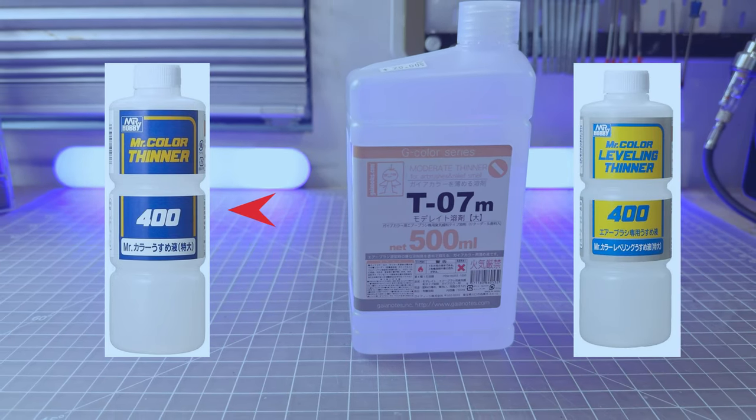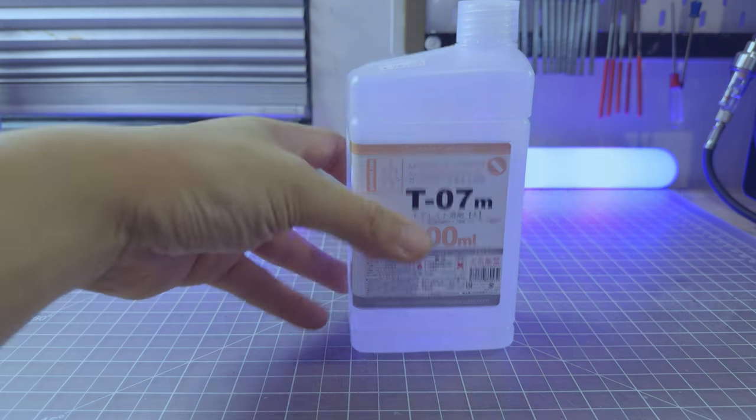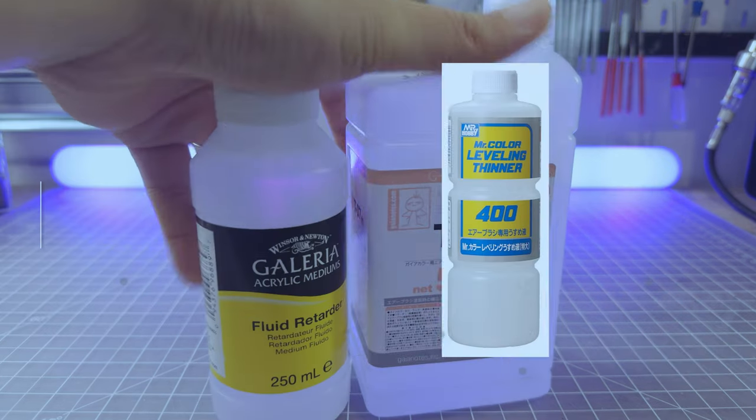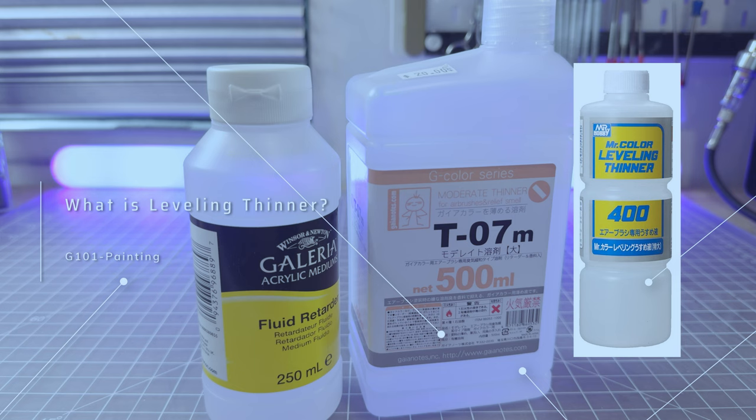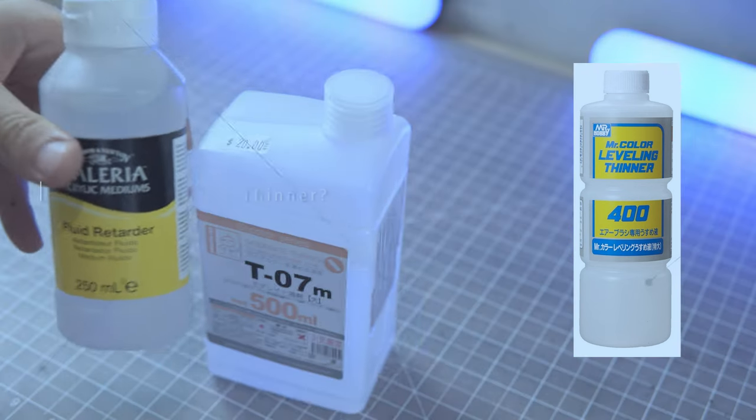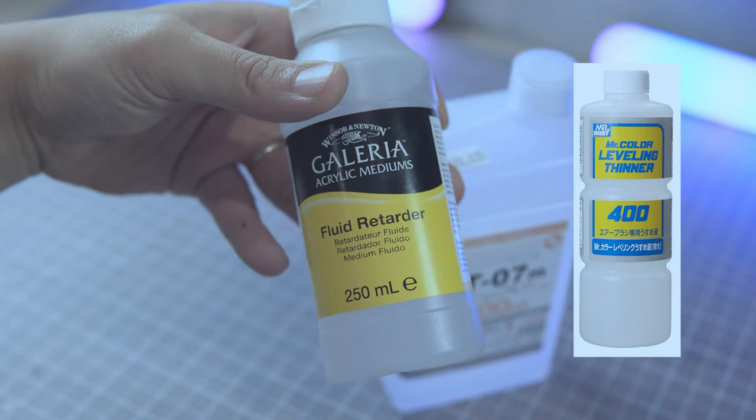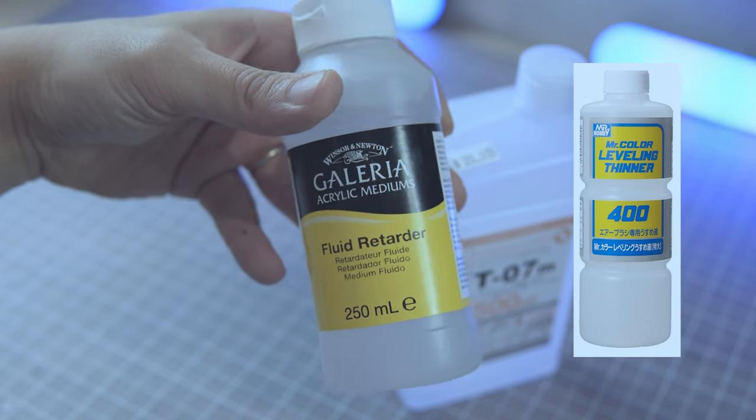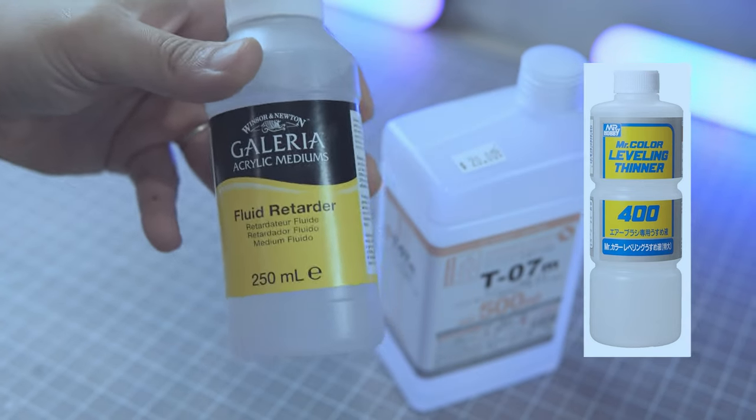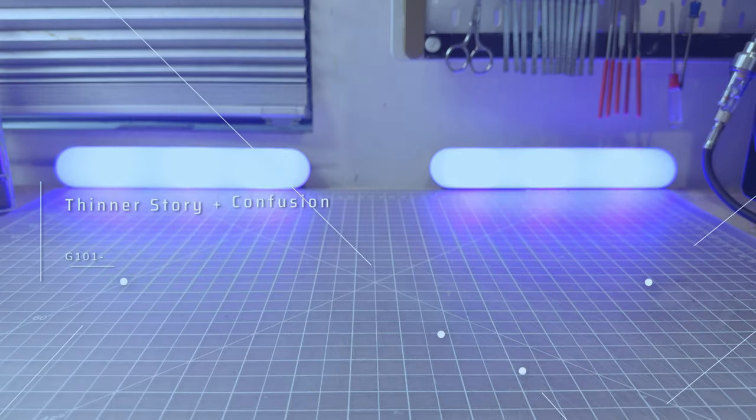The little confusion I had was between Mr. Color Thinner and Mr. Leveling Thinner. Mr. Thinner is popular, but many recommends Mr. Color's Leveling Thinner because it's got the retarder, which makes the paint dry slower so they can level themselves using the gravity. Here comes like a second confusion.